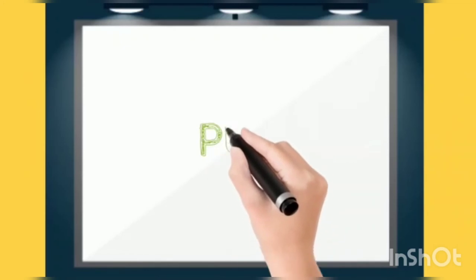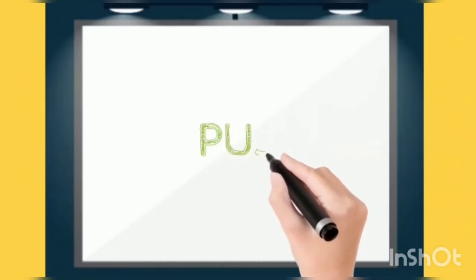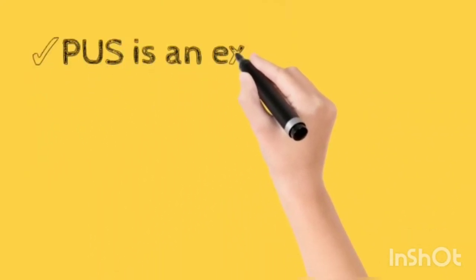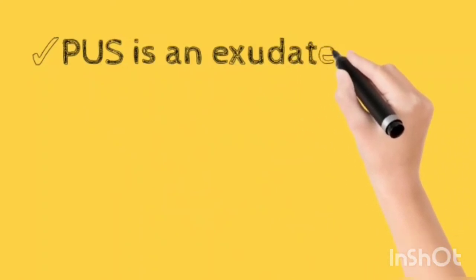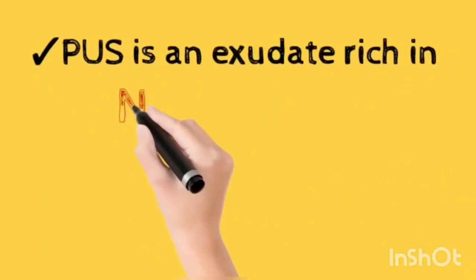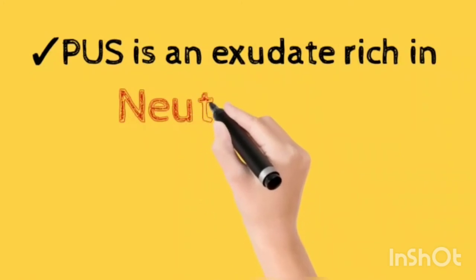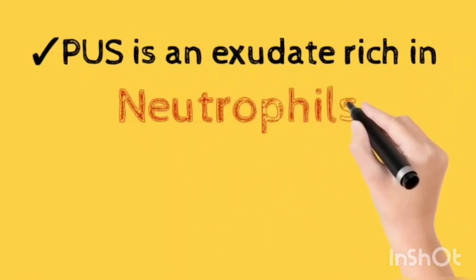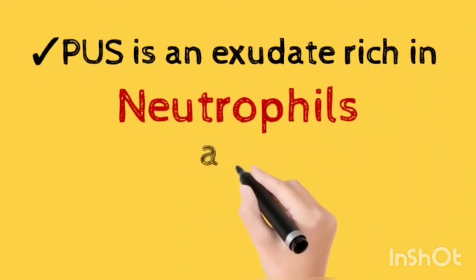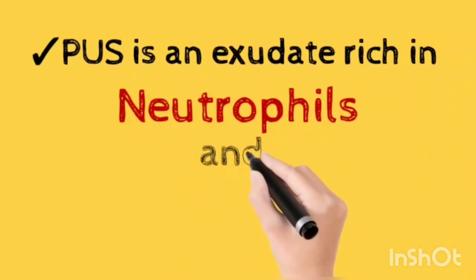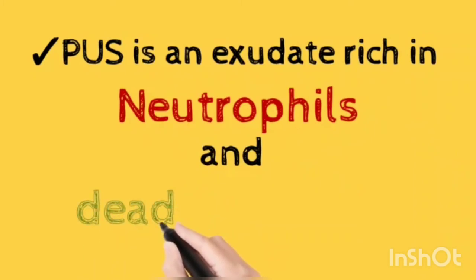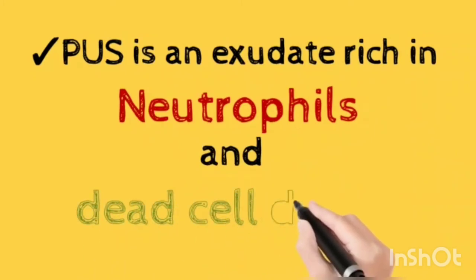Now let us see what is pus. We know that acne or any pimple has pus in it. Pus is nothing but a form of exudate — an exudate in which neutrophils and leukocytes are present in very high amounts. So pus is an exudate rich in neutrophils as well as leukocytes and dead cellular material. These dead cells accumulate in the form of pus in an acne or a pimple.